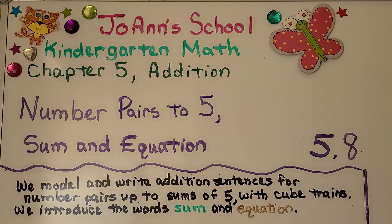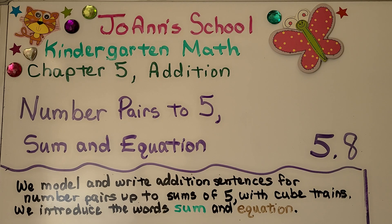Lesson 5.8: Number Pairs to 5. In this lesson, we model and write addition sentences for number pairs up to the sums of five with cube trains. We introduce the words sum and equation.